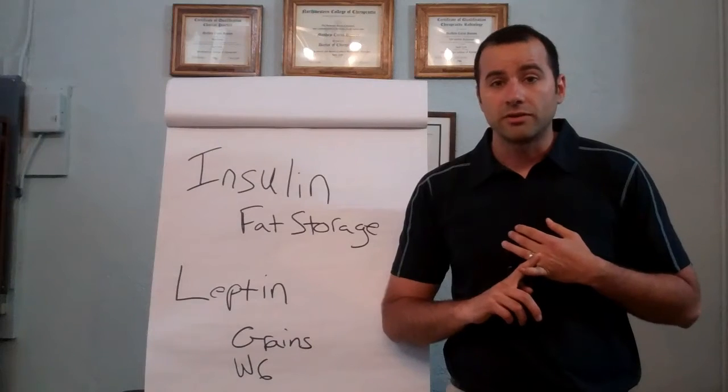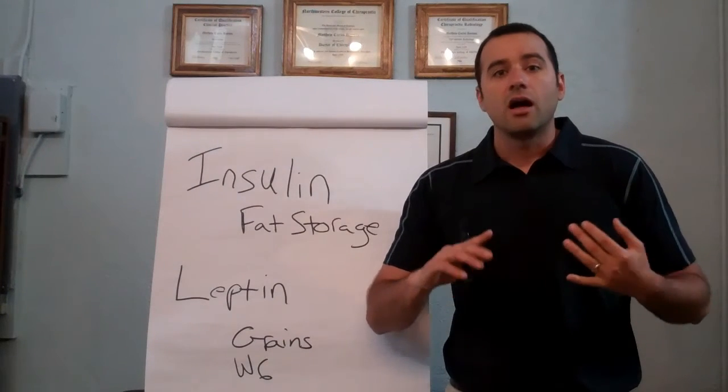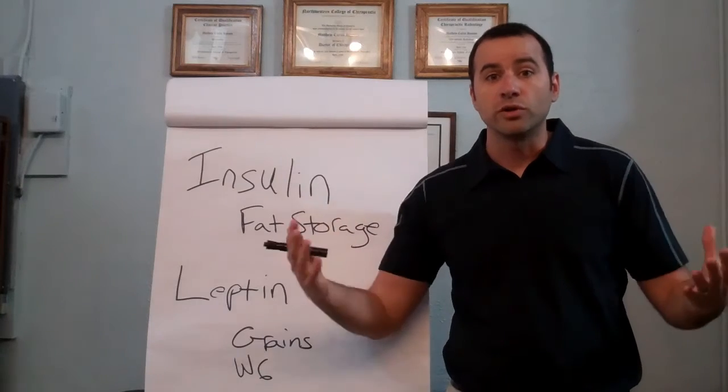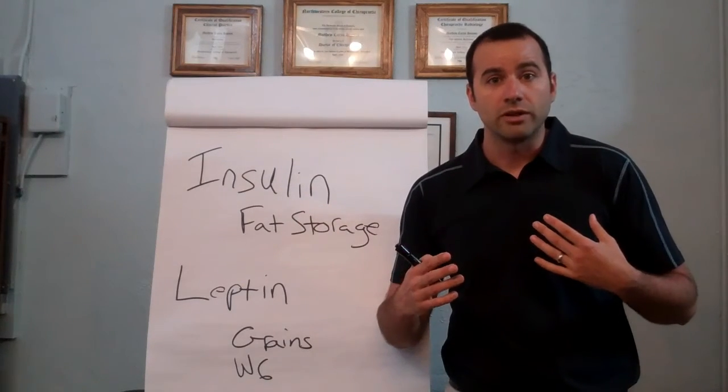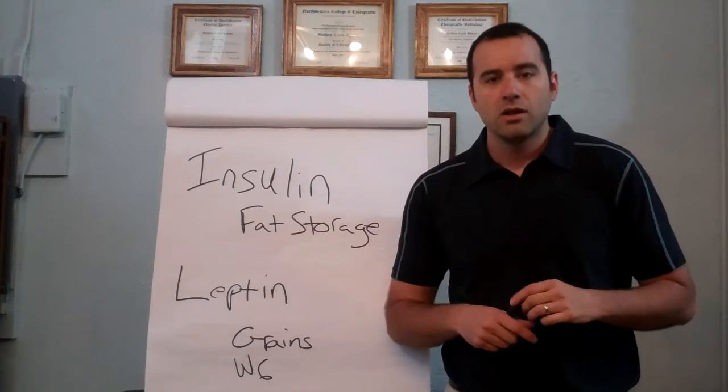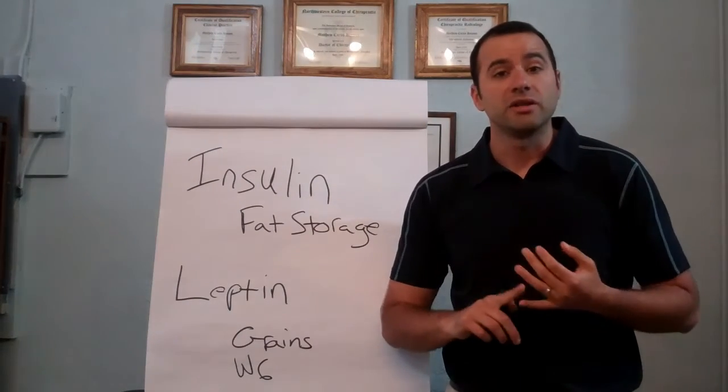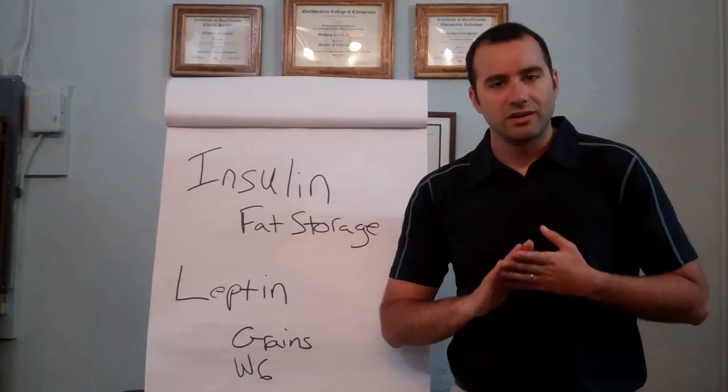Our ancestors, our primal hunter-gatherer ancestors, ate very little dietary carbohydrate. They didn't get the big carbohydrate load that we would get if we would eat a bagel with cream cheese and a coke. They never had to deal with that. And they were much healthier, much happier, much leaner and much fitter than we are.